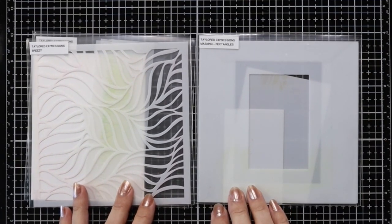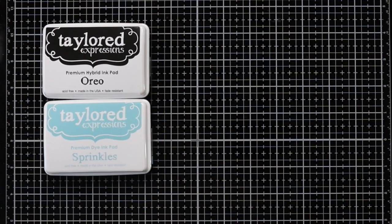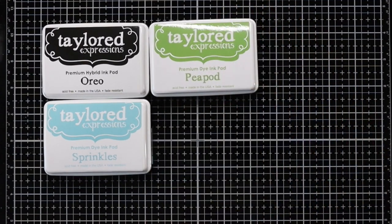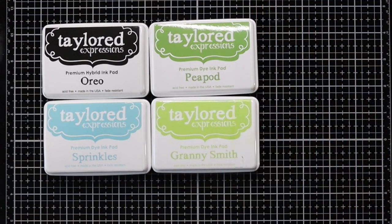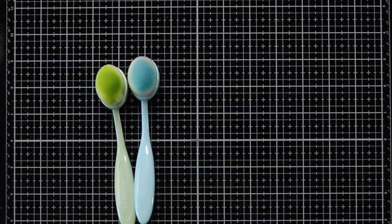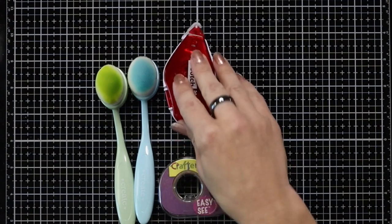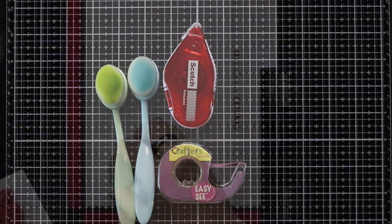The inks that I'm going to use are Oreo, Sprinkles, Peapod, Granny Smith and I will also be using Pineapple. Some of the supplies are the blending brushes, an adhesive and some low-tack adhesive for my die cutting.